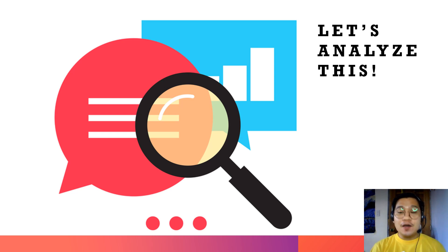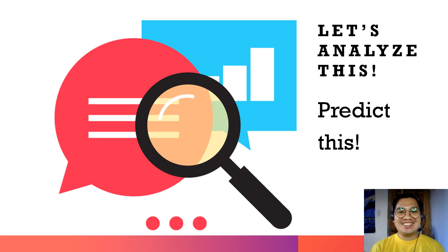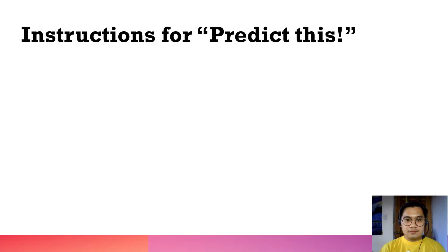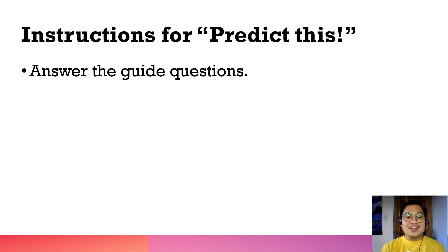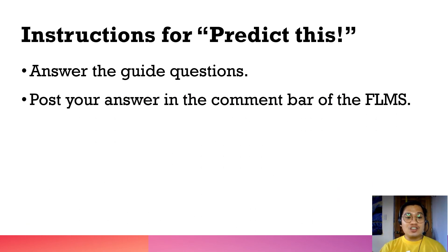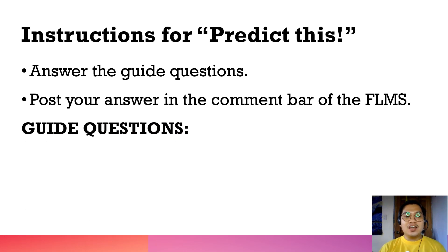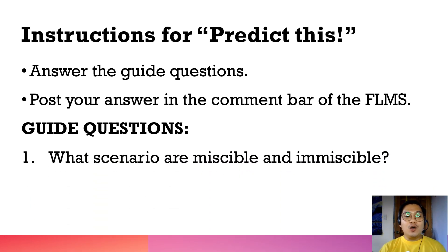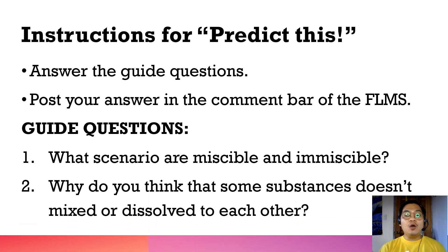Now let's move to the next part: Let's Analyze. For this activity, you need to predict what will happen in the given scenario. Here are the instructions: number one, answer the guide questions; number two, post your answer in the comment bar of the FLMS. The guide questions are: first, what scenarios are miscible and immiscible? Second, why do you think some substances don't mix or dissolve with each other?